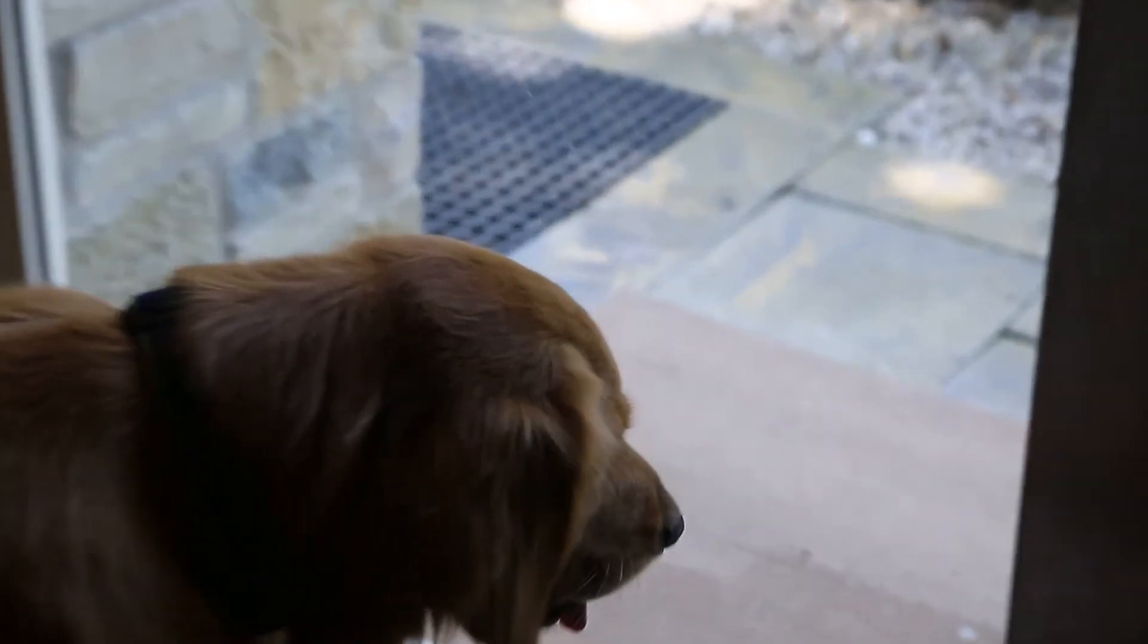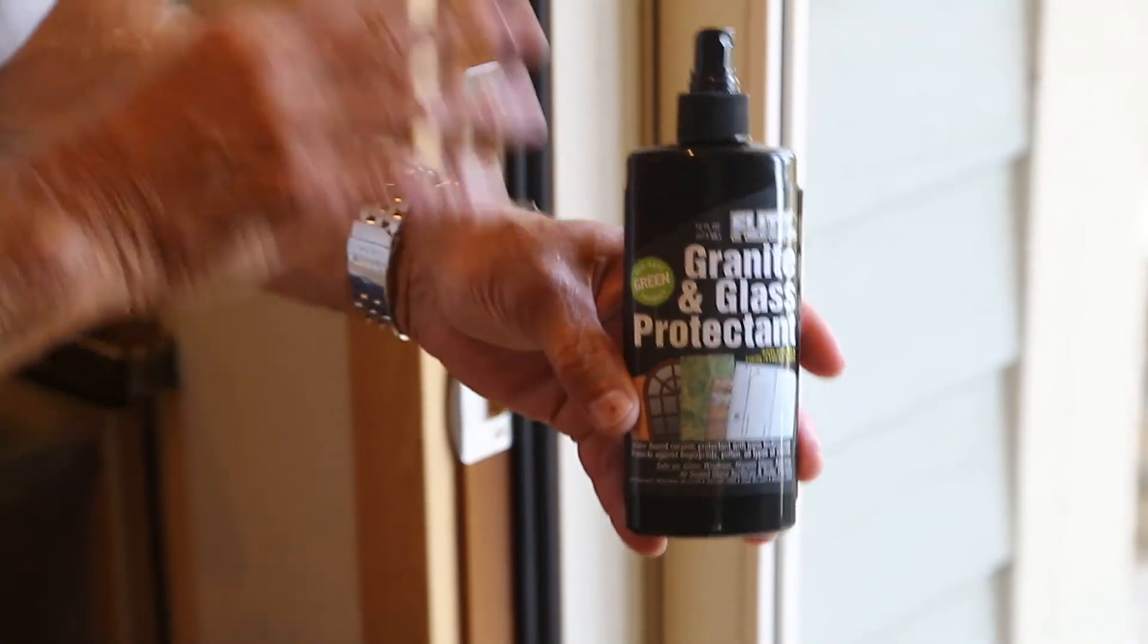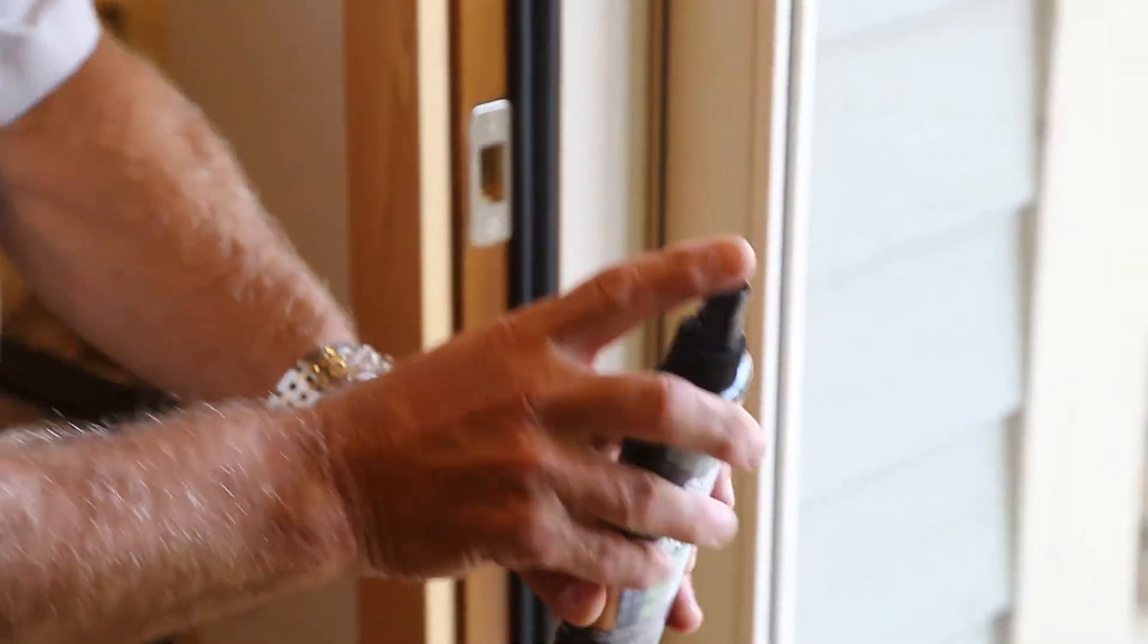there's always the issue of protecting the glass. Nose prints from animals, fingerprints from your children. The Flitz granite and glass protectant is used for glass as a sealant. Now again, as I mentioned, this is a ceramic coating. So I'm going to spray this on and simply wipe it off.